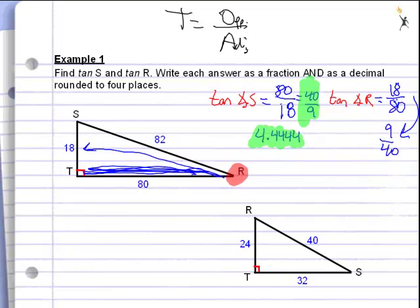I still need this as a decimal though, so I'm going to take 9 divided by 40, and find out that as a decimal is 0.225. I've got my reduced fraction and my reduced decimal to four places, though the calculator only gave me three. That's as far as it goes.